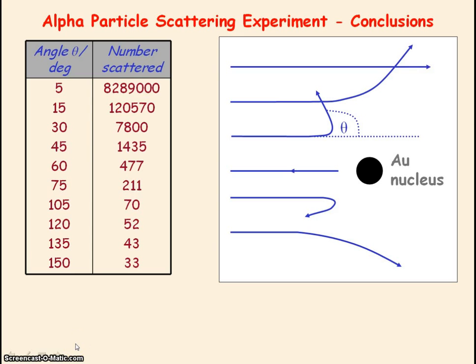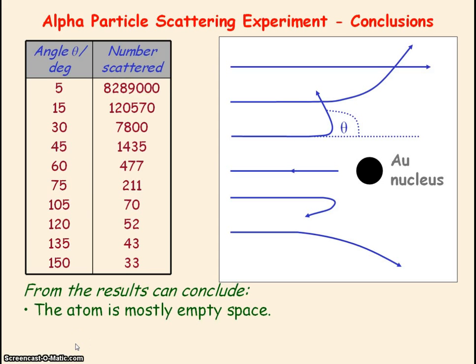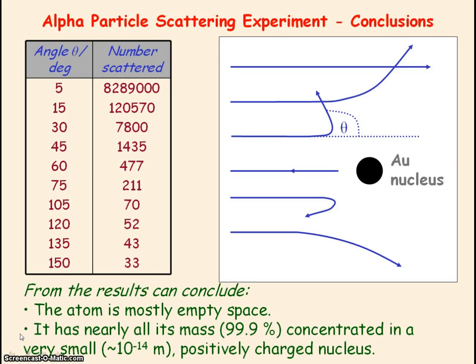Ernest Rutherford analyzed the results from the experiment and made these conclusions about the atom, saying that it was mostly empty space, the atom had nearly all its mass concentrated in a very small volume which represented the nucleus, and the nucleus was positively charged. Can you work out how Rutherford made these conclusions from the results?